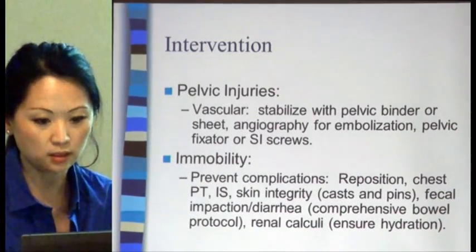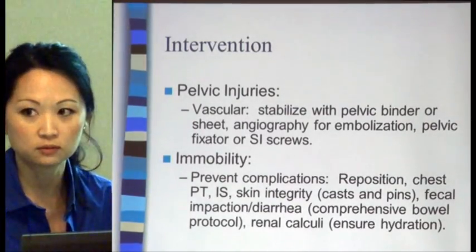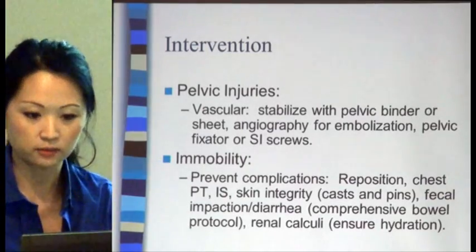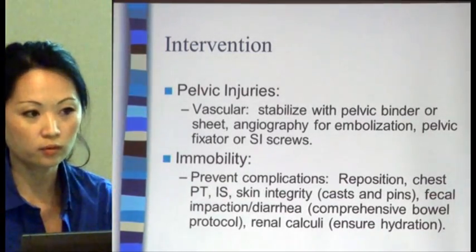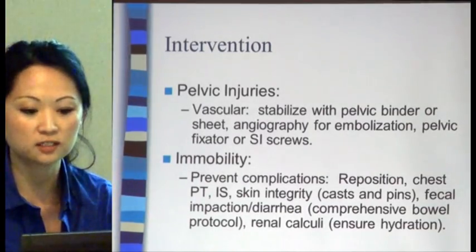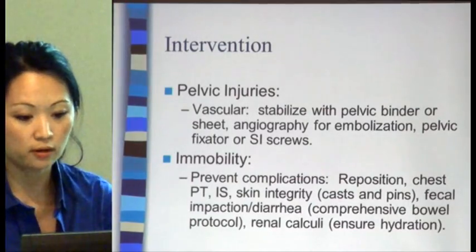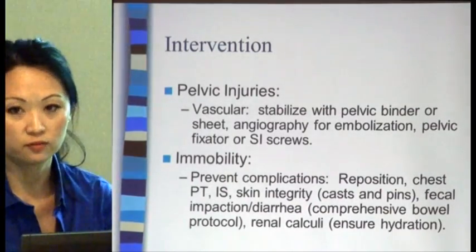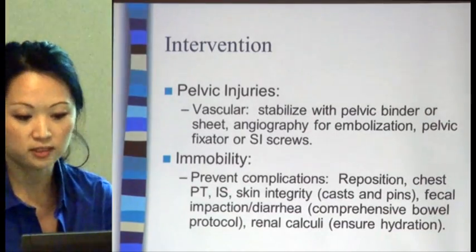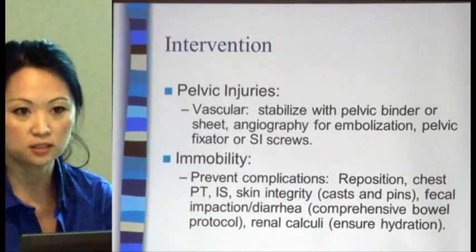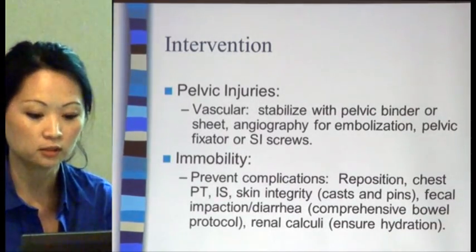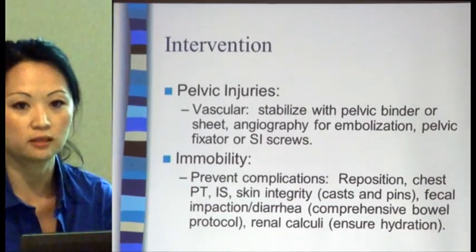For pelvic injuries, sometimes a sheet or a pelvic binder — a bright orange corset-like device — is used to stabilize and control bleeding. If that doesn't work, the patient may go to IR for embolization or to the OR for a pelvic external fixator or SI screws. Because these patients are immobile, it's important to reposition them, provide chest PT, encourage aggressive incentive spirometry, maintain skin integrity with casts and pins, prevent fecal impaction with a good bowel regimen, and ensure adequate hydration to prevent renal calculi.